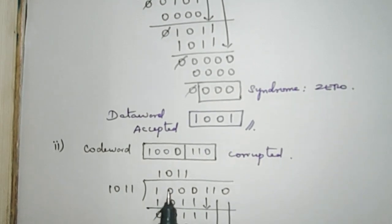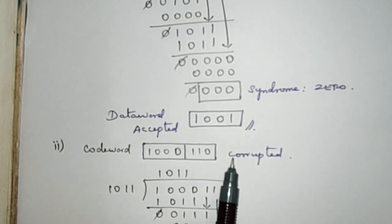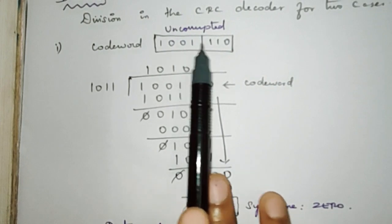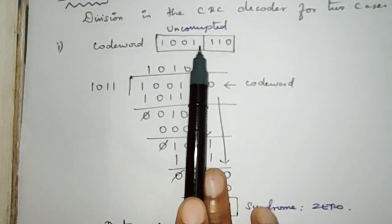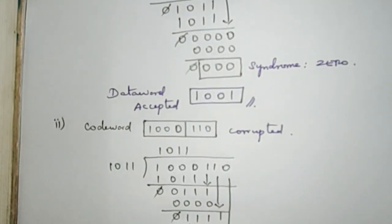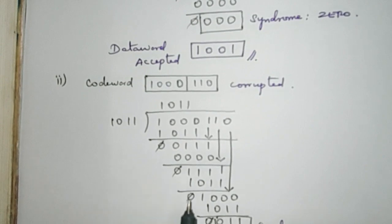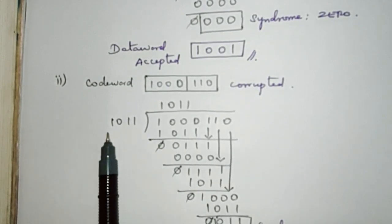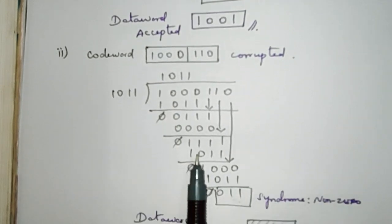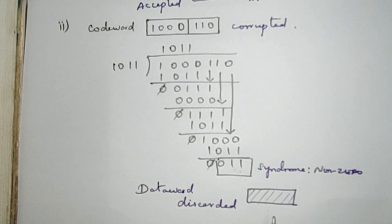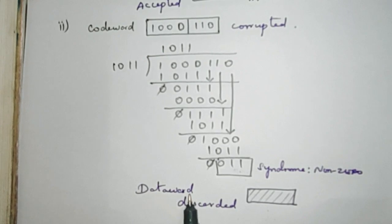Let us see another case — when our code word is corrupted. In the previous case we took the uncorrupted code word 1001110. In the second case, only one bit has changed, from 1 to 0. When we perform the same modulo-2 XOR division operation, we finally get 011. So in this case the syndrome is non-zero, the data word gets discarded, and it is not the correct data word. By this CRC mechanism we are not going to correct the error — we are just going to detect the error.